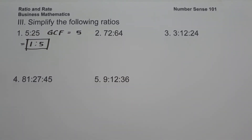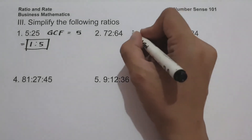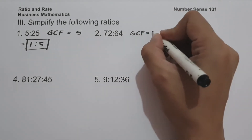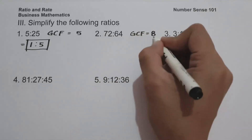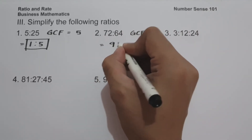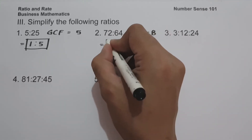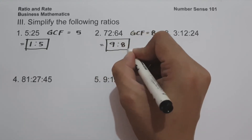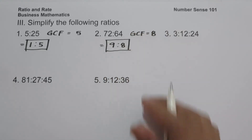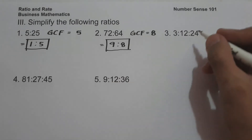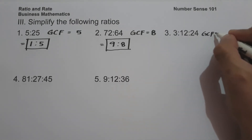On number 2, we have 72 is to 64. The GCF of 72 and 64 is 8. 72 divided by 8 is 9, and 64 divided by 8 is 8. Therefore 72 is to 64 is equal to 9 is to 8.